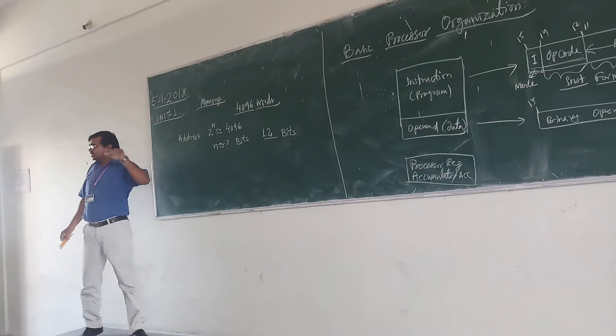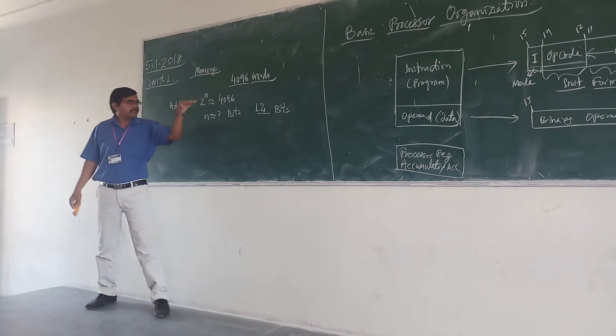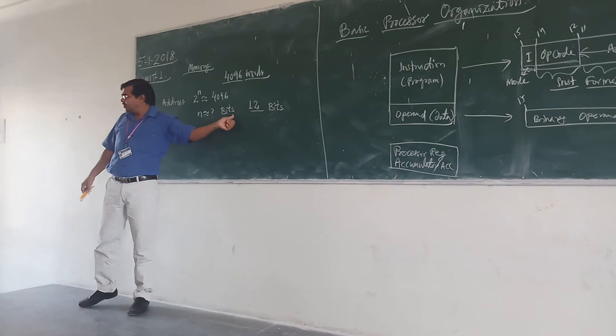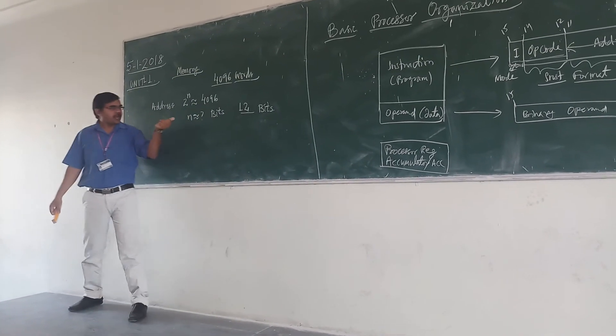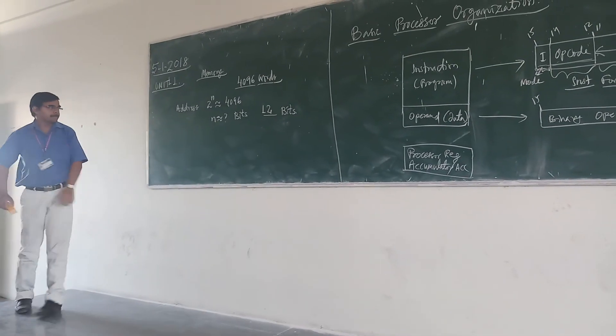This means that suppose if whatever the word may be, if it is 2 to the power n, we need n bits. We will calculate the n and we will say that we need n bits for addressing it.